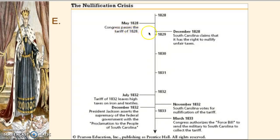Soon after the tariff is passed, South Carolina will create a document called the South Carolina Exposition and Protest. John C. Calhoun is one of the writers of this, although his name was not officially on it at the time. The document argues that South Carolina had the right to nullify these unfair taxes placed on them. So the idea of nullification is coming up.